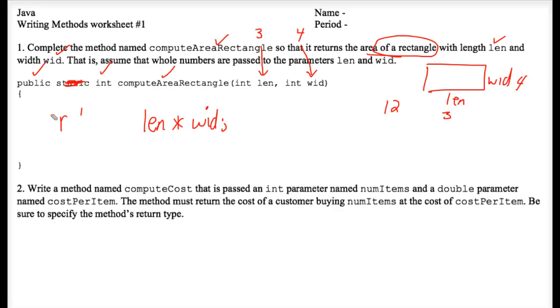However, some students prefer using local variables to store the final total here. They might create a variable called area and set it equal to len times wid, and then they would aptly return area.